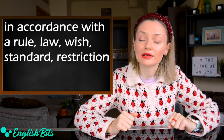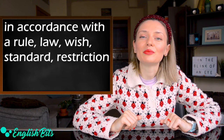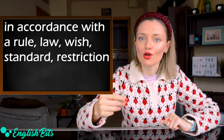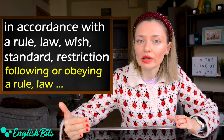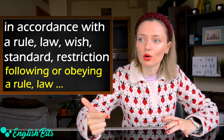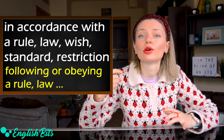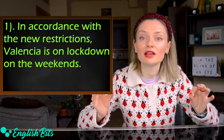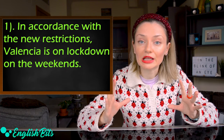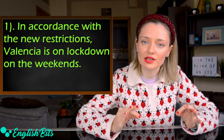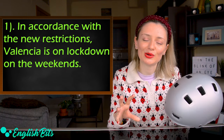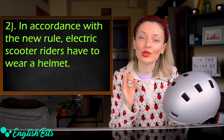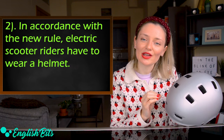Number five: 'in accordance with.' We can say 'in accordance with' a rule, law, wish, standard, or restriction. It means 'following or obeying' a rule, law, standard, wish, or restriction. For example: 'In accordance with the new restrictions, Valencia is on lockdown on the weekends.' And: 'In accordance with the new rule, electric scooter riders have to wear a helmet.'